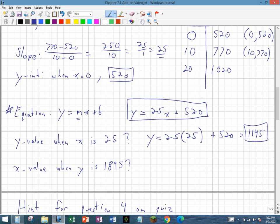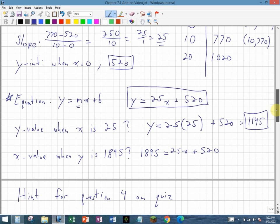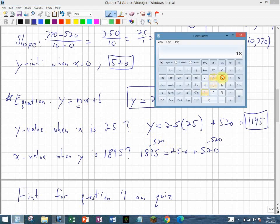For the x value when y is 1895, what I do is I take my 1895, and I substitute it in for y this time. And that's going to be equal to 25x plus 520. Now this time I need to solve for x. So I'm going to have to subtract 520 on both sides first.